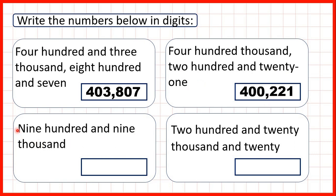Now we have 909,000. Again we read the number up to the word thousand, which here is the whole number, but we follow the same steps. So we write 909 and then a comma.